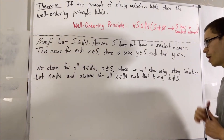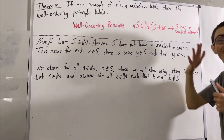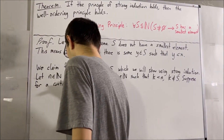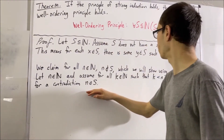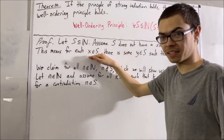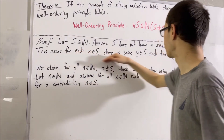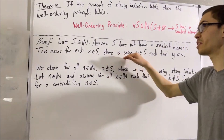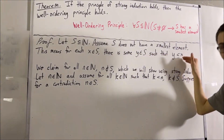We want to show N is not an element of S. So assume for a contradiction that N is an element of S. What happens if N is an element of S? Well, remember, we know that for every element X in S, there exists a smaller element Y in S. So it must work for N. We can replace X with N, and we have that there is some element Y in S such that Y is less than N.